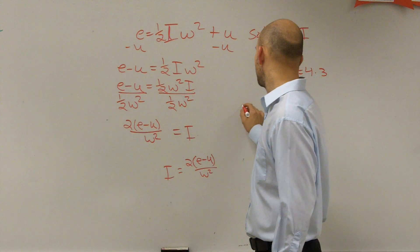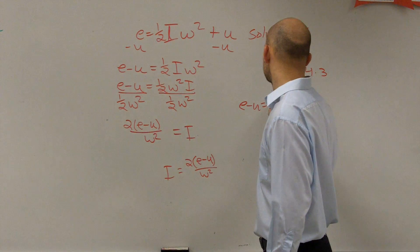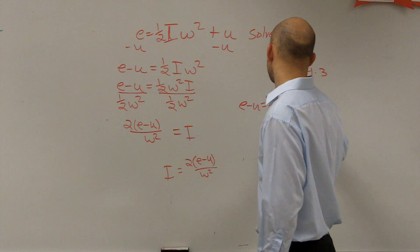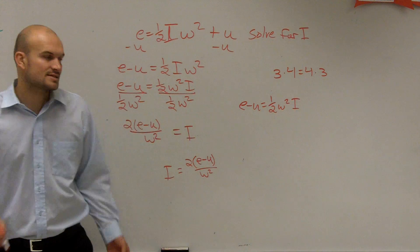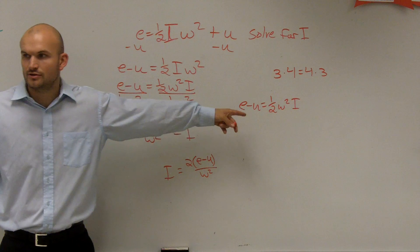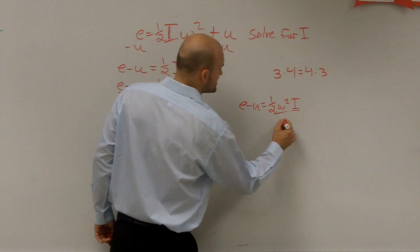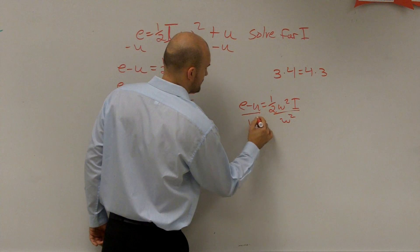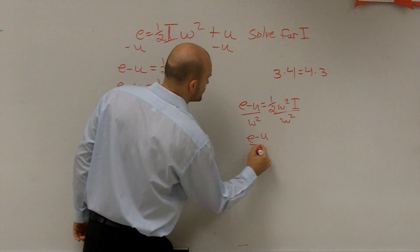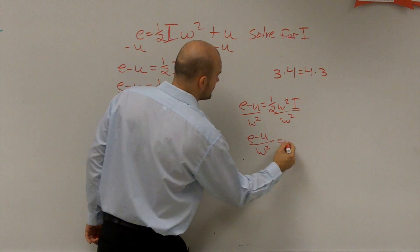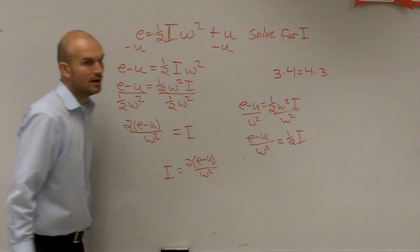If that doesn't make sense, let me show you one more way real quick. Let's get to this point. So I have e minus u equals one half w squared i. Ladies and gentlemen, you don't need to do this. You don't need to do them together. You can do them separately. Divide by w squared. e minus u divided by w squared equals one half i.